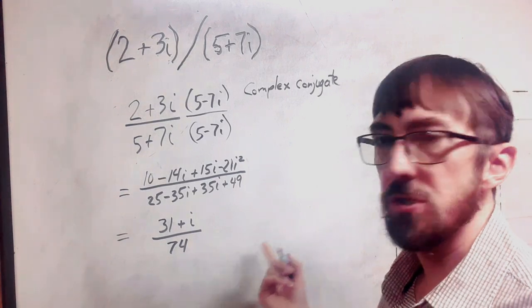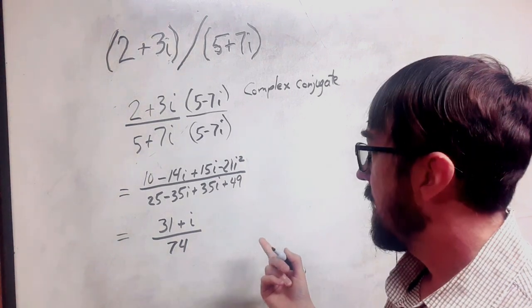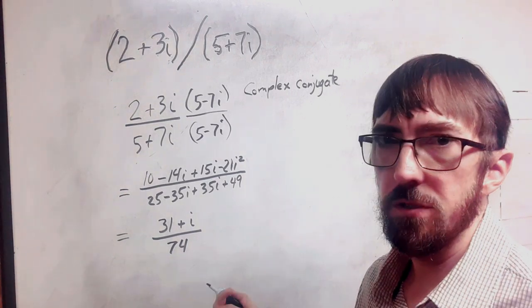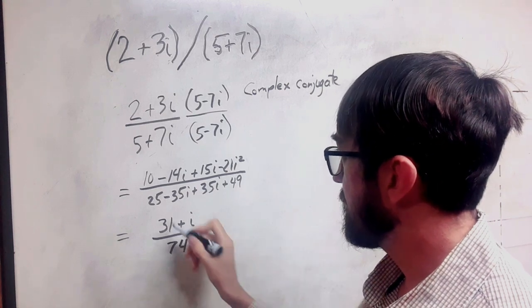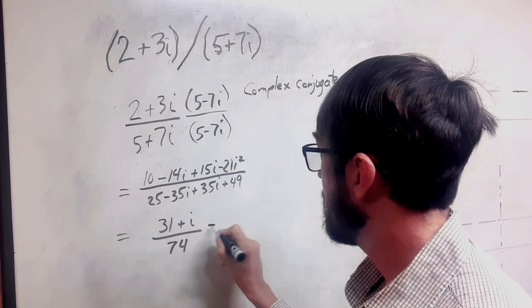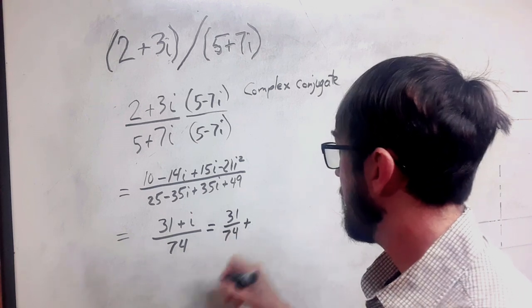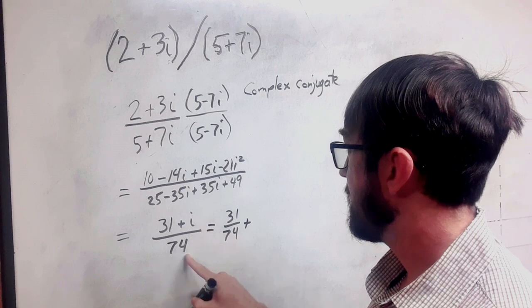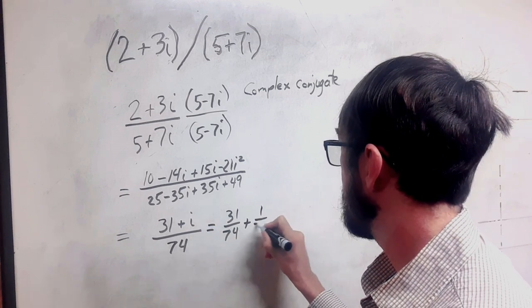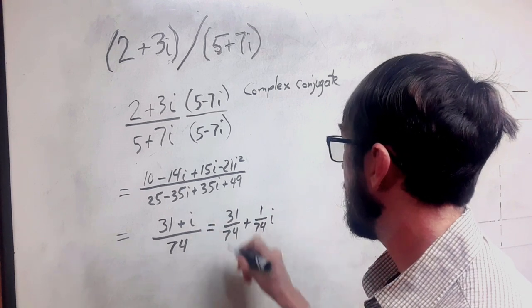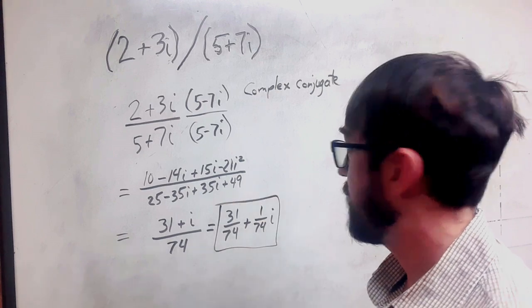And then from here, we are just going to split this into the standard form for a complex number. So it's 31 divided by 74, that's our real part, plus i divided by 74 or 1 74th i. And this is our quotient.